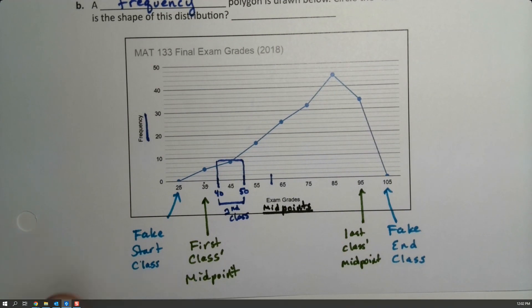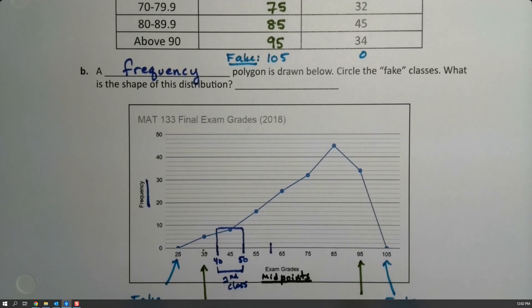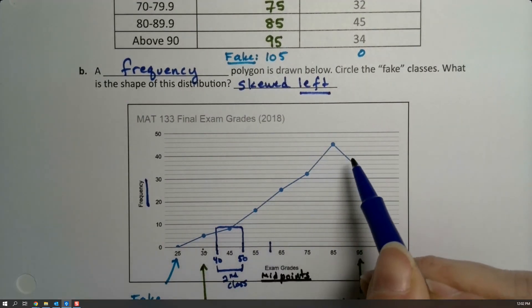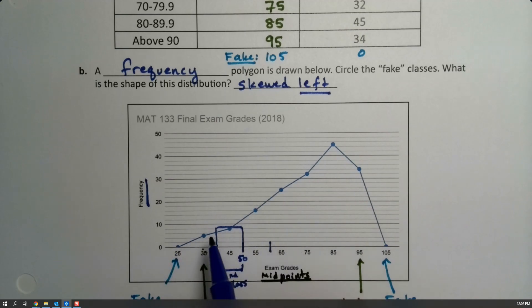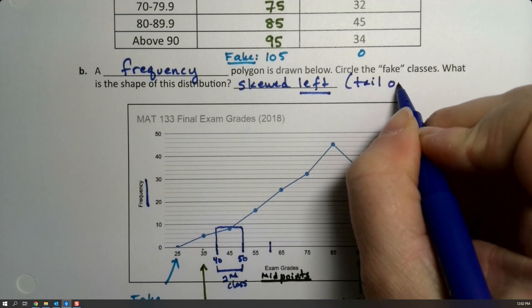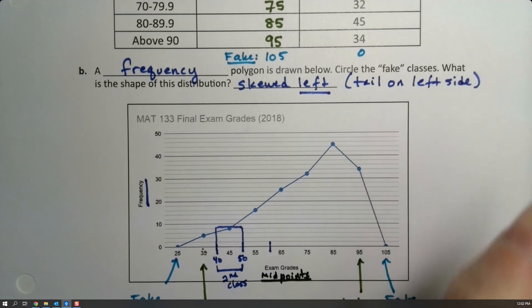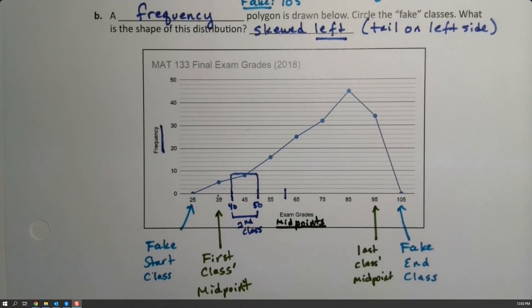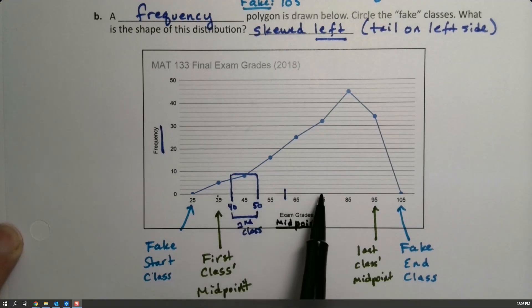We don't generally draw frequency polygons by hand — they're drawn for us — but they show the same information as a histogram, just as a line graph. We can see that the shape of this distribution is skewed left: it has a tail on the left side with high values on the right and low values on the left. It's a specialized graph, but it's important to know that the horizontal axis uses midpoints, which means you have to visualize where the histogram classes would have been.